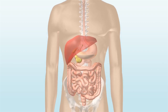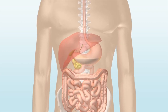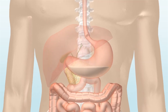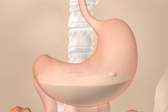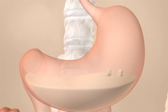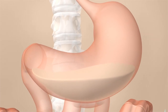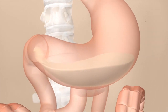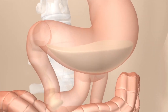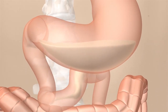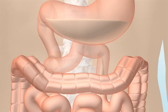In the stomach, the food is broken down into smaller pieces and digestive juices are added. The now liquid food is passed onto the small intestine, where the nutrients are absorbed and digested.